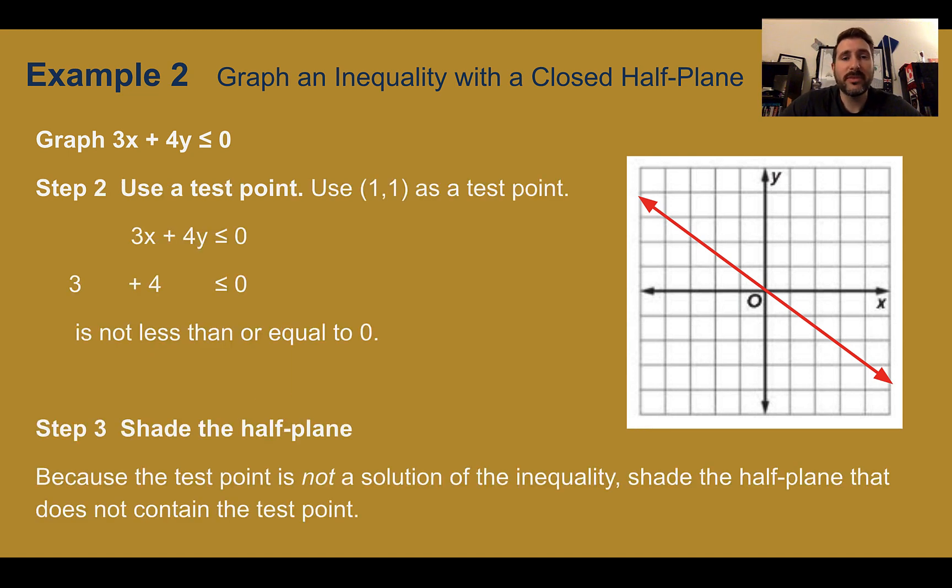I'm going to choose a test point. This time, (0,0) is on the line. I don't want to use it. I'm going to choose (1,1), since those are also easy numbers to multiply by. But I could choose anything else anywhere on the graph. So plugging in 1 for each, I'd end up with 3 plus 4, which is 7. 7 is not less than or equal to 0, which makes this false. We'd end up with 7 is less than or equal to 0. Not true, that's false.